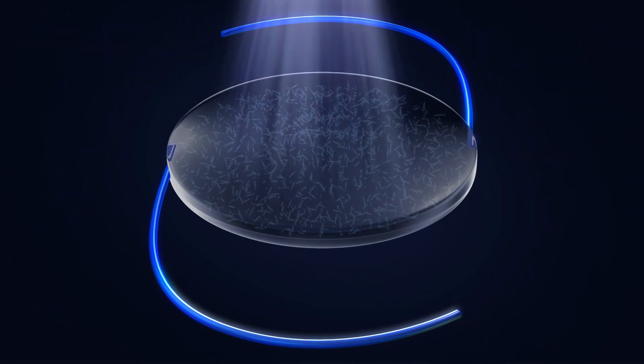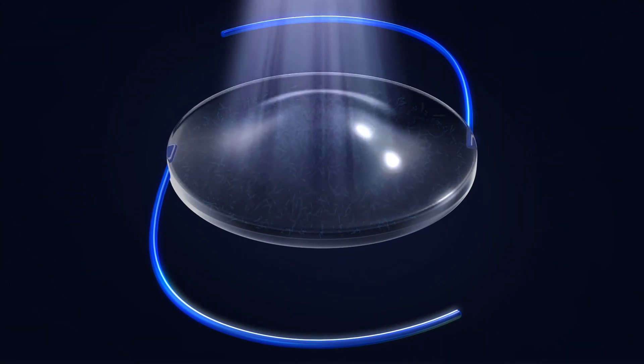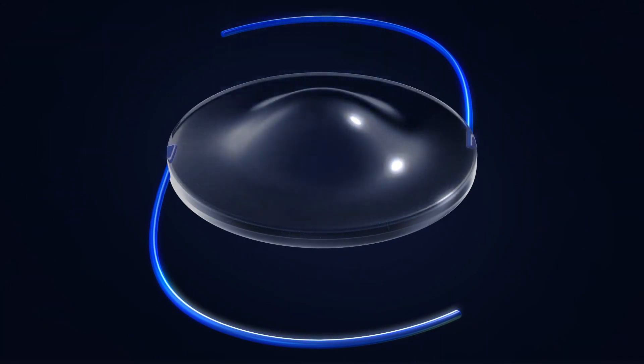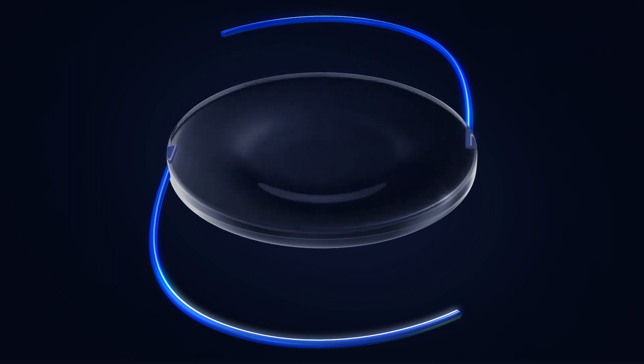The remaining unreacted macromers physically diffuse into the exposed area, causing a highly predictable change in the shape of the lens and a refractive power change of the RxLAL.